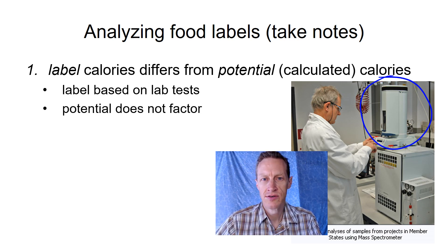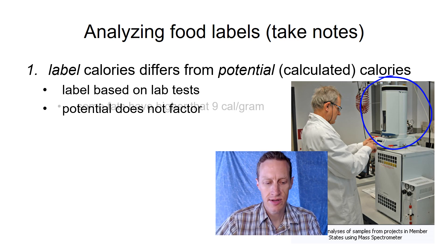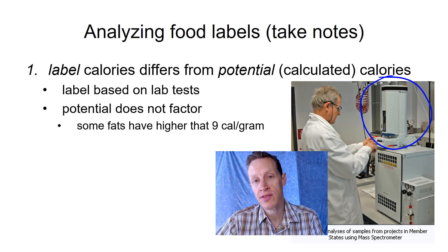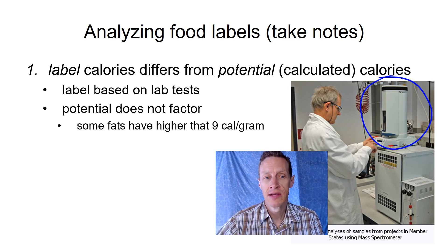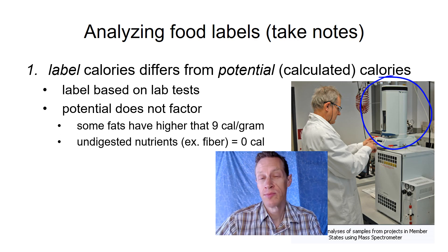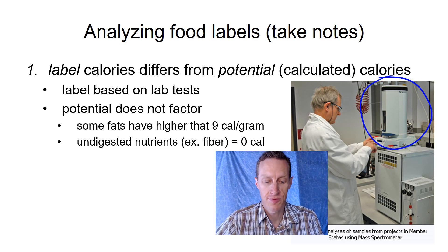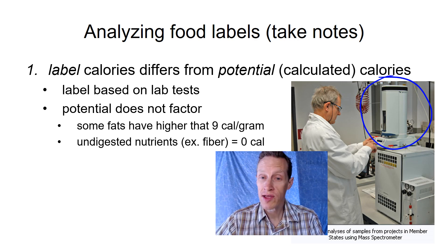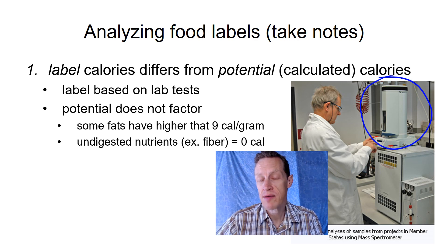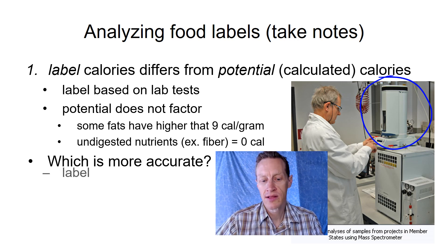When we calculate the calories using the 9-for-4 ratios, there are also a few things those don't take into account. Like, some fats might have higher than 9 calories per gram, making your calorie total higher. Also remember that there are some calories that we will not actually absorb or obtain from food. Fiber, for example, gives us 0 calories. And when we calculate 4 calories per gram for carbohydrates, we might be including some fiber in there that's not actually going to be digested. What you see on the label is more accurate than potential calories.